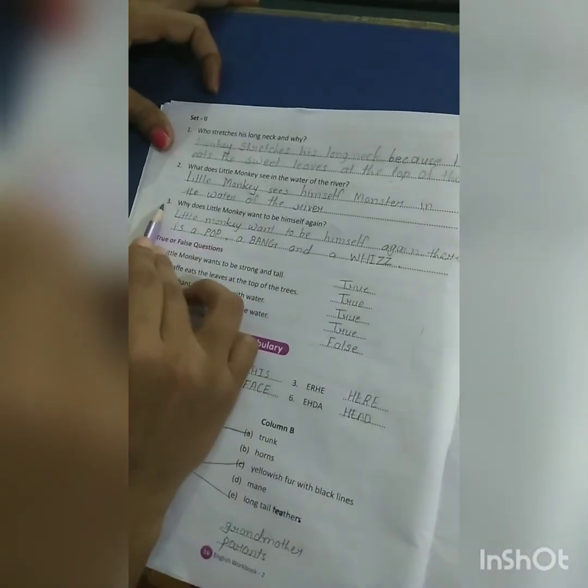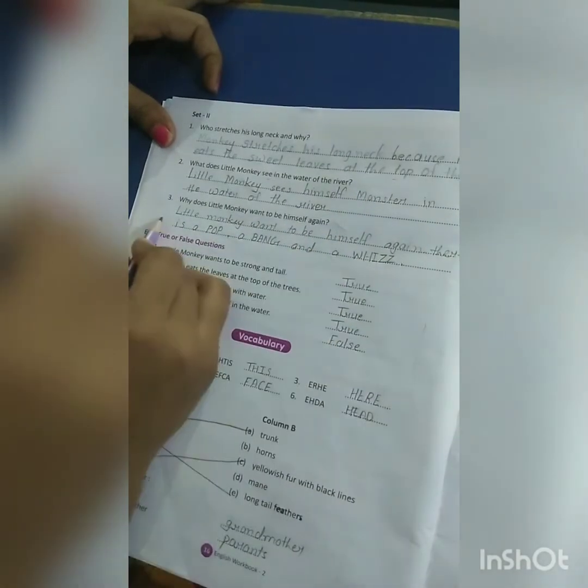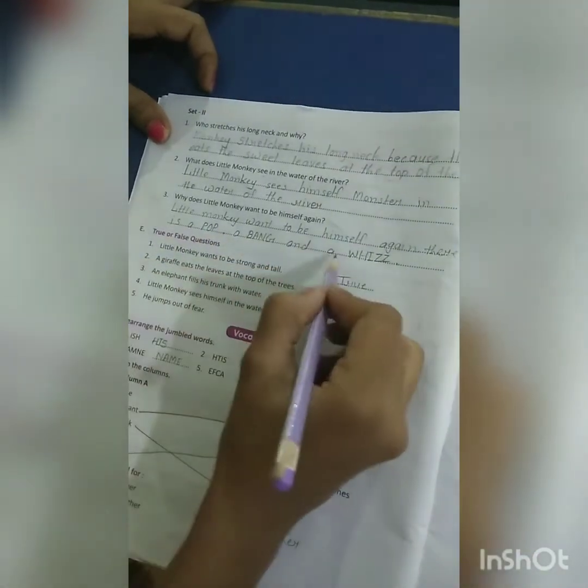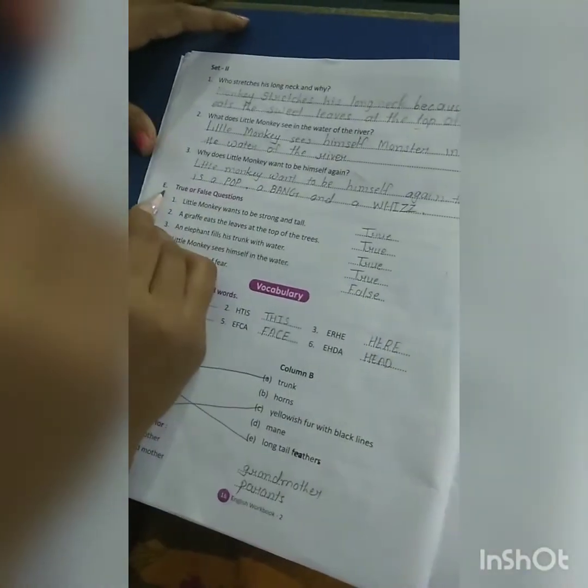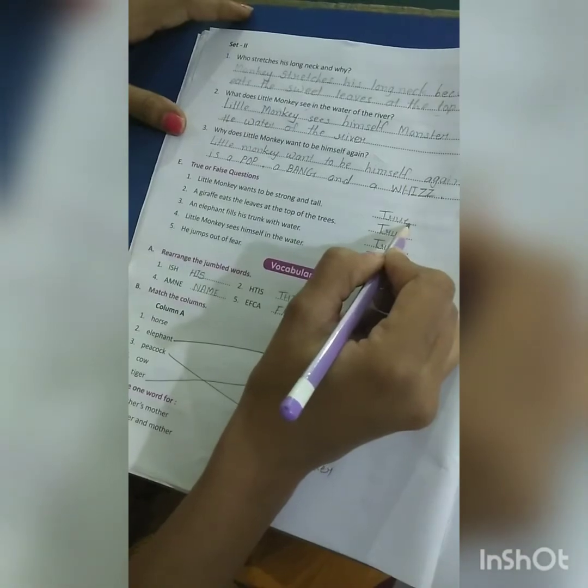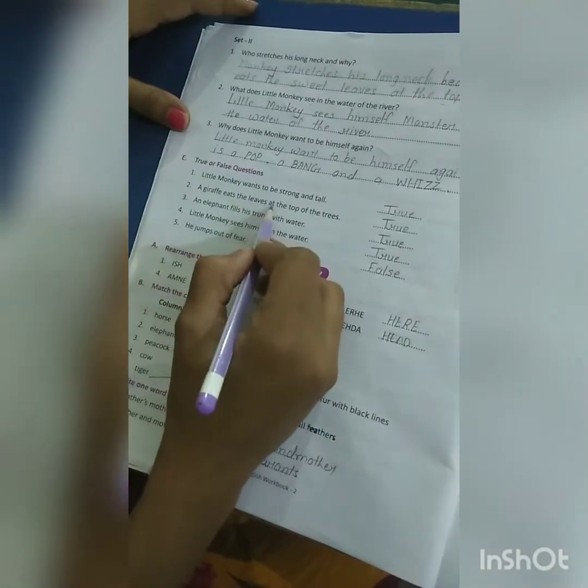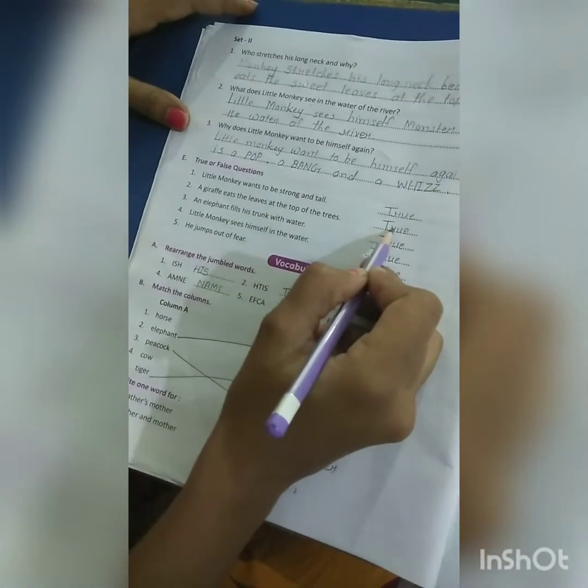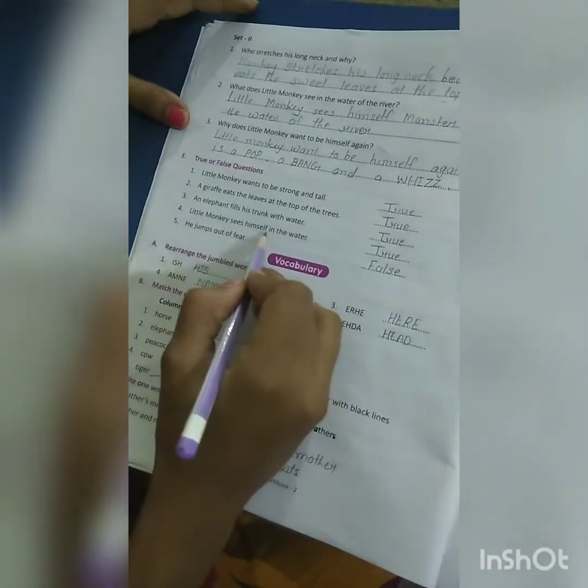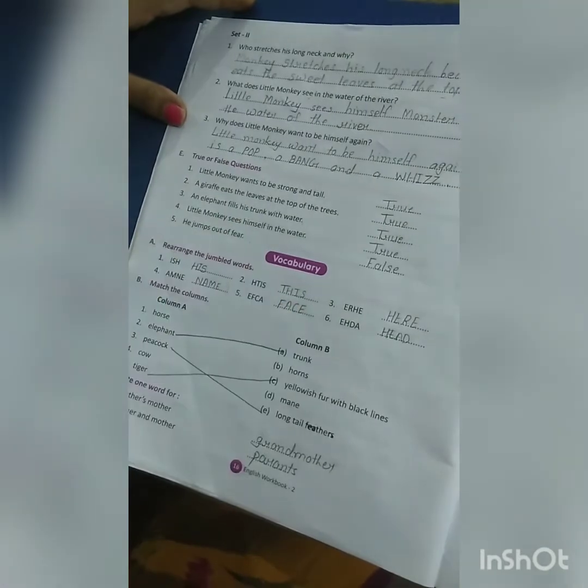Question number 3: Why does little monkey want to be himself again? Answer: The little monkey wants to be himself again. Part E, true and false. The little monkey wants to be strong and tall - true. A giraffe eats leaves at the top of the tree - true. An elephant fills his trunk with water - true. Little monkey sees himself in the water - true. He jumps out of fear.